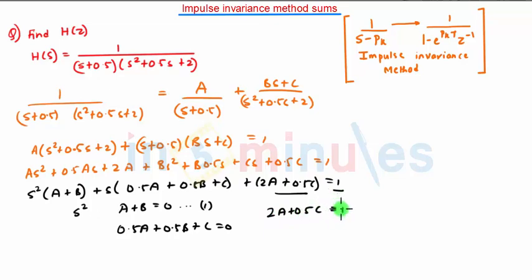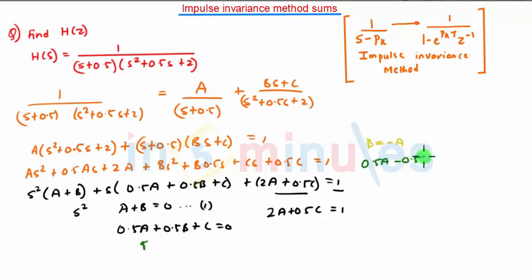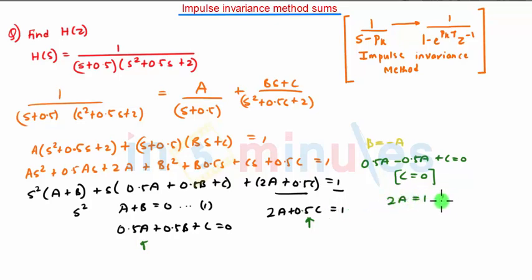Now we will solve these equations simultaneously. First, B = −A. Substituting B = −A into the second equation gives 0.5A − 0.5A + C = 0, so C = 0. Substituting C = 0 into the constant equation gives 2A = 1, so A = 0.5. And since B = −A, B = −0.5.